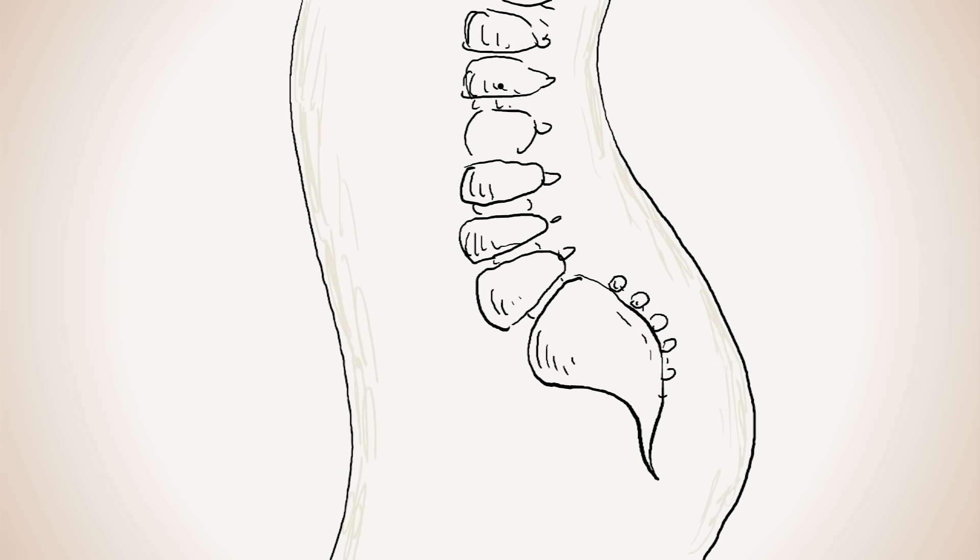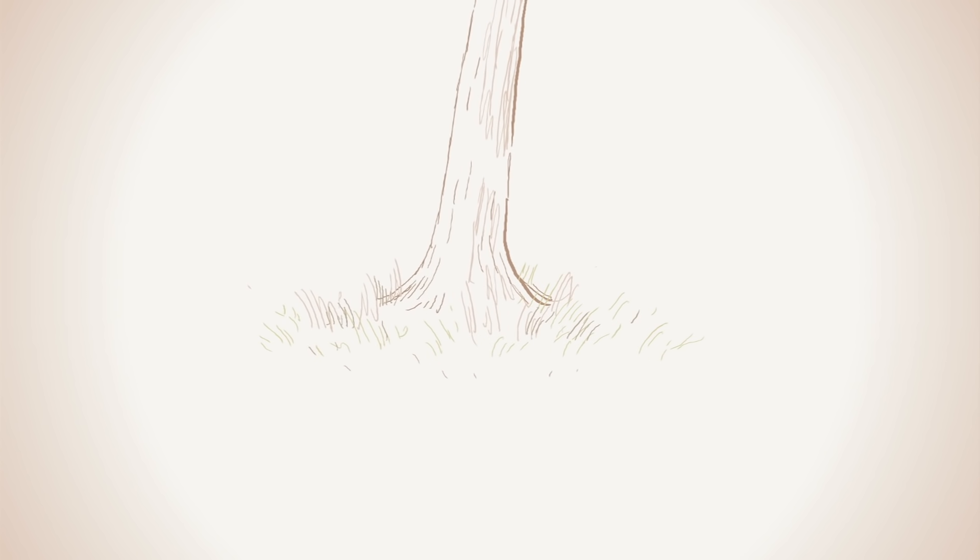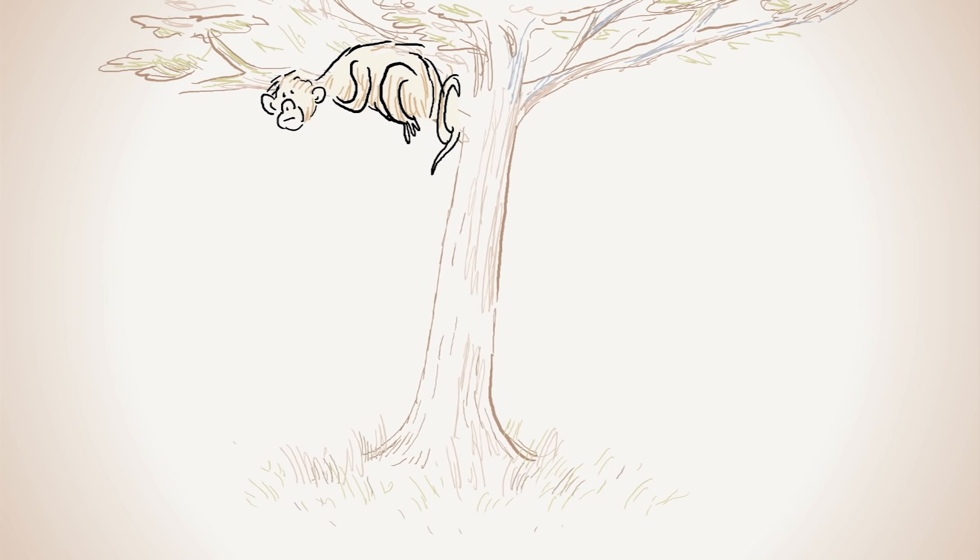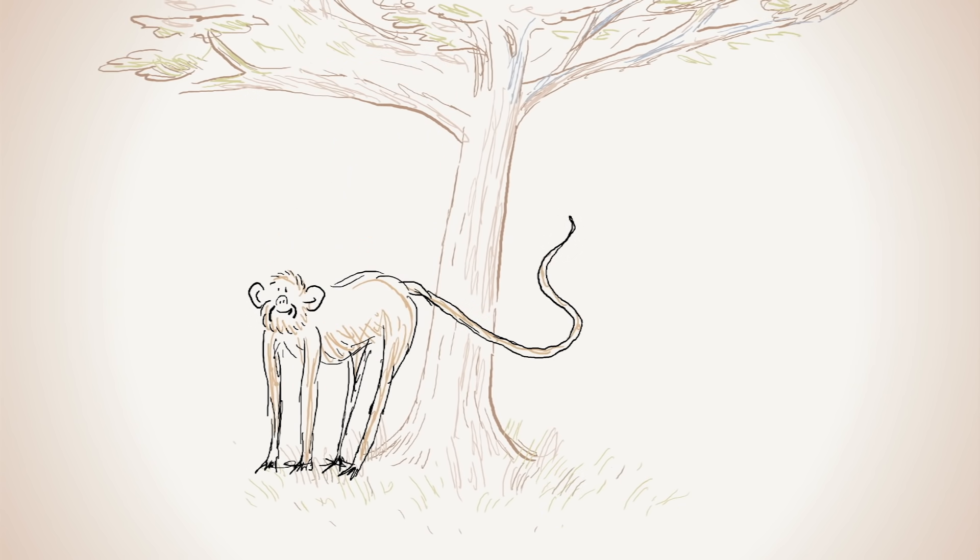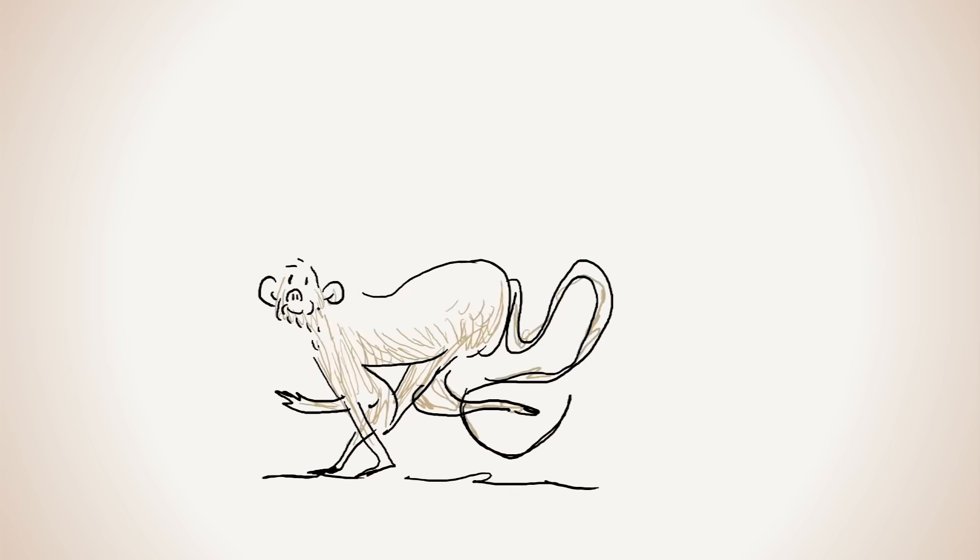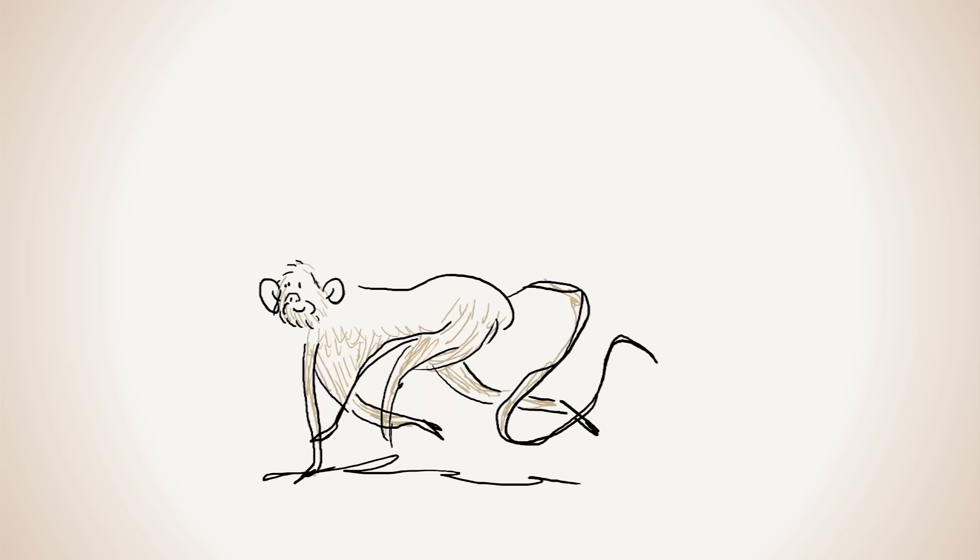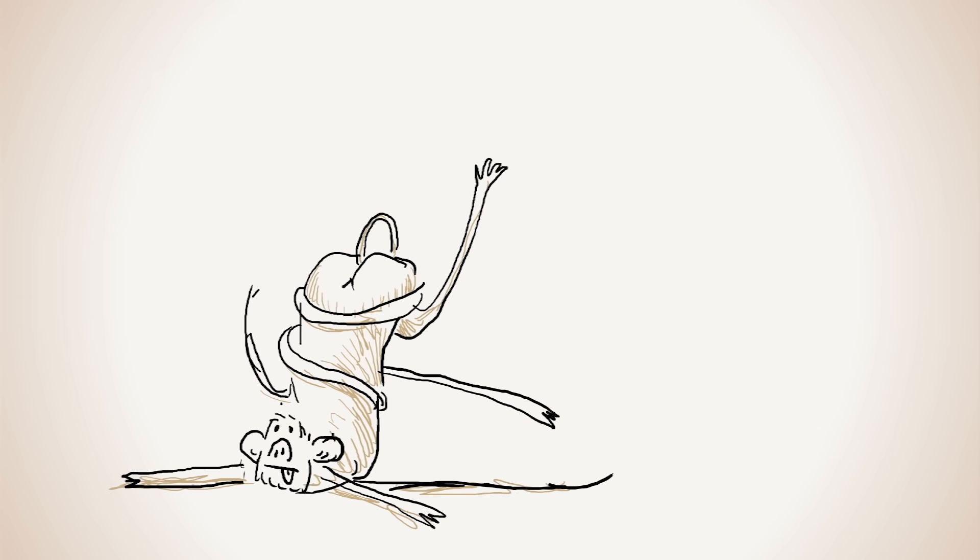Take the tailbone. Evolutionary biologists think that as the climate got drier and grasslands popped up, our tail-bearing ancestors left the trees and started walking on land. The tails that had helped them in the trees began to disrupt their ability to walk on land.